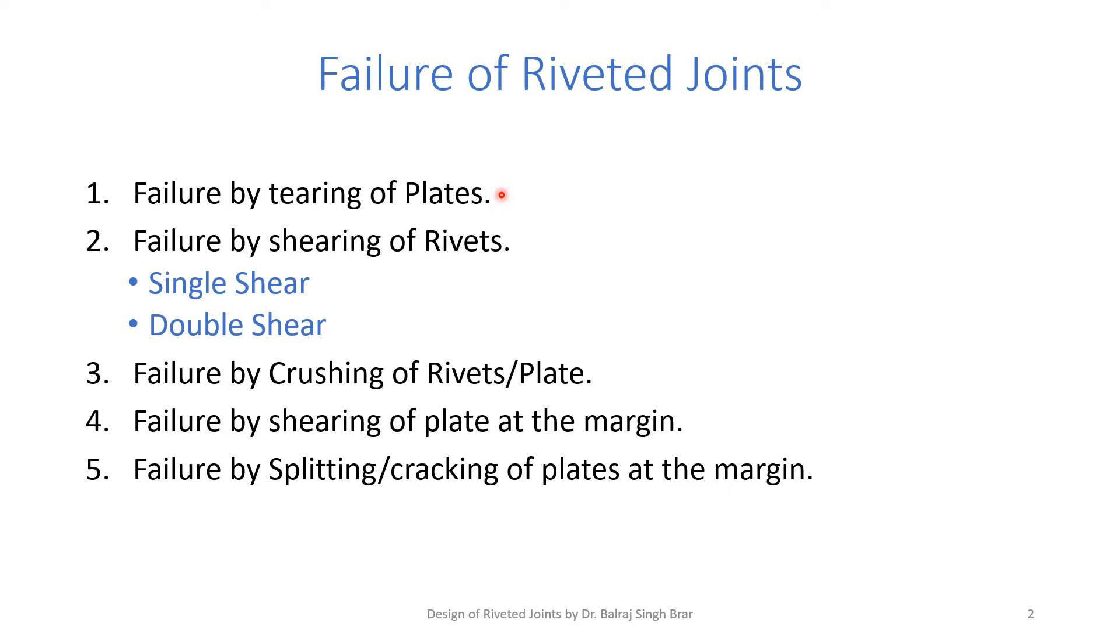Then is failure by shearing of rivets. We have discussed single shear of rivets and double shear of rivets. Single shear of rivets take place in overlap joints or butt joints with a single strap. Double shear of the rivets take place in the case of butt joints with two butt straps.